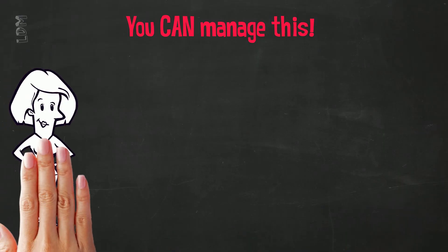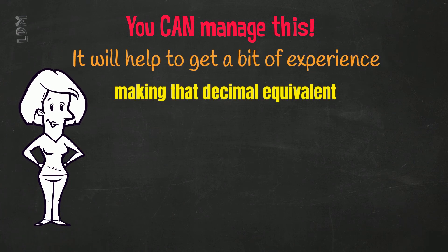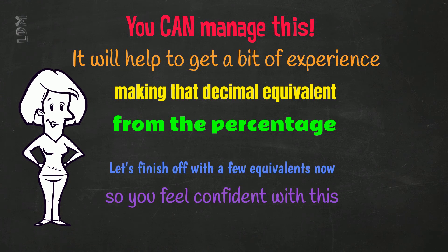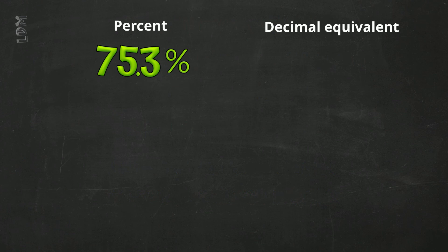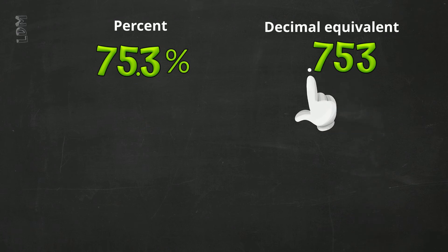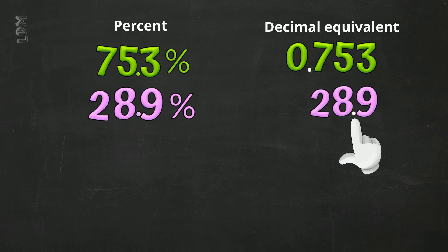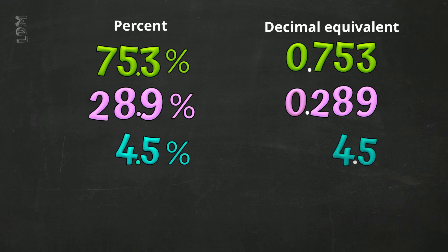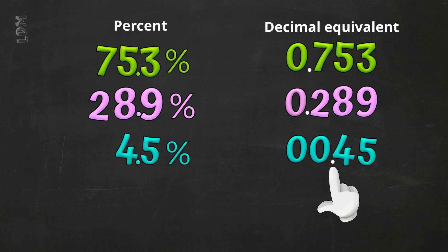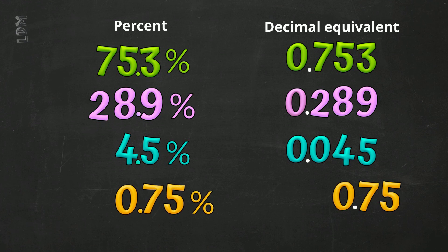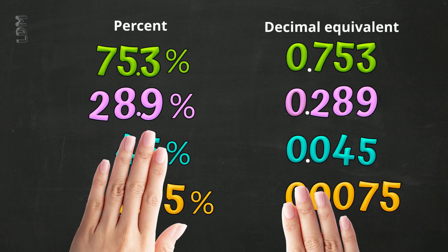You can absolutely manage this. It will help to get a bit of experience making the decimal equivalent from the percentage. Let's finish with a few equivalents so you feel confident. 75.3% → divide by 100, move the decimal point 2 places left: 0.753. 28.9% → 0.289. 4.5% → 0.045. 0.75% → 0.0075.